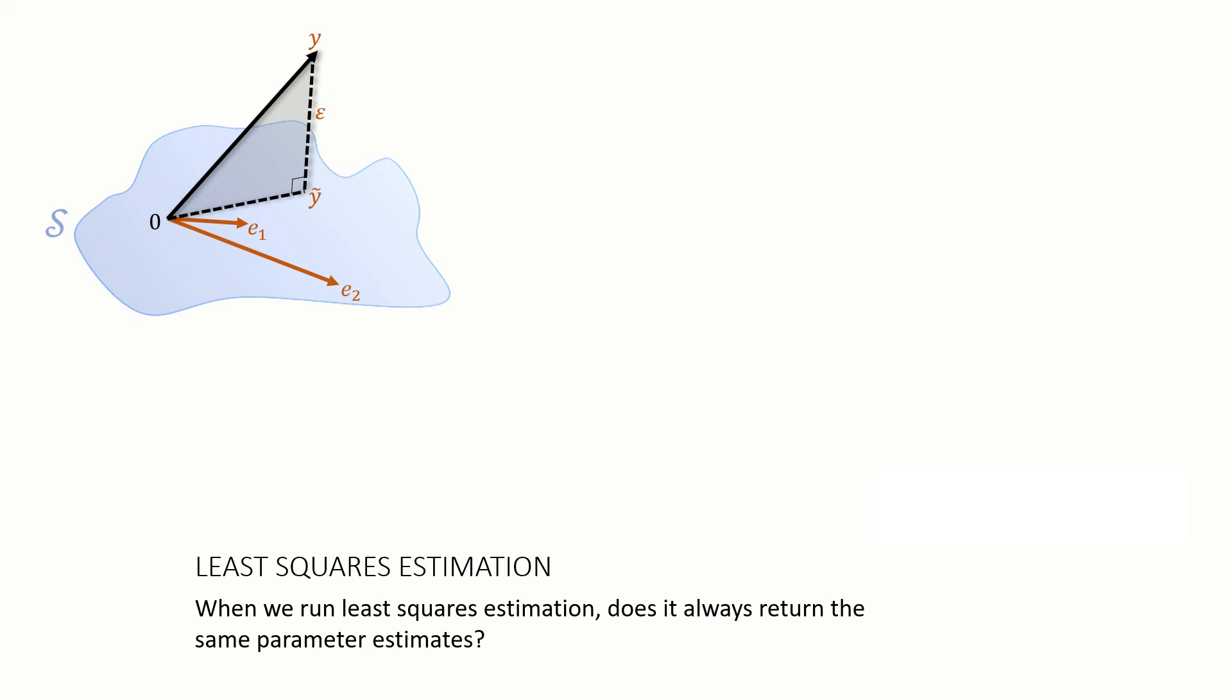It's minimizing a function, that's what least squares estimation is, and when we minimize a function we need to watch out for local minima. What if least squares estimation returns a minimum and the next time we run it we get a different minimum?